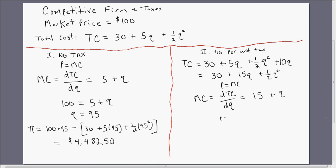So setting $100, the price equal to 15 plus Q, this competitive firm will now only produce 85 units of output, 100 minus 15.